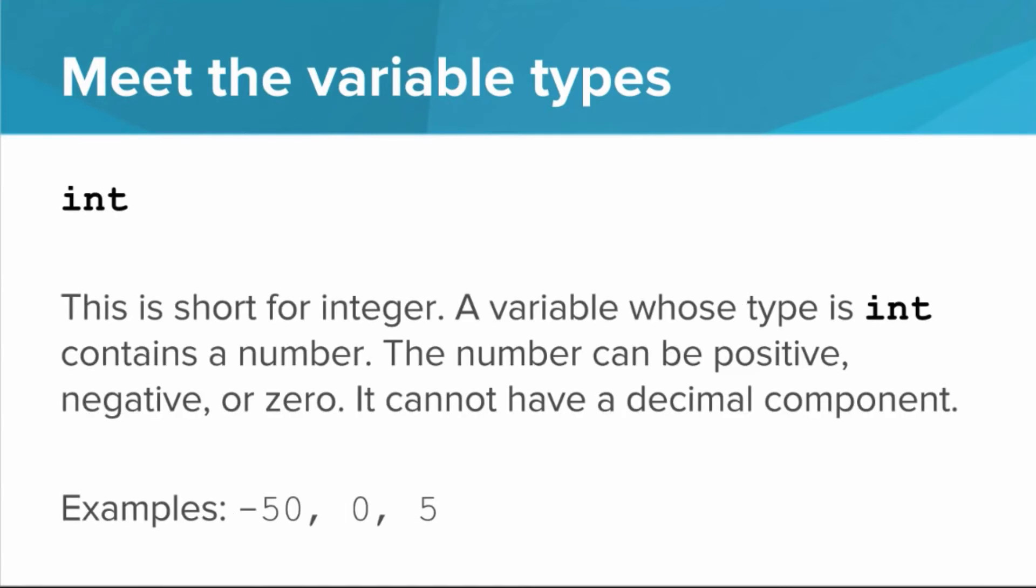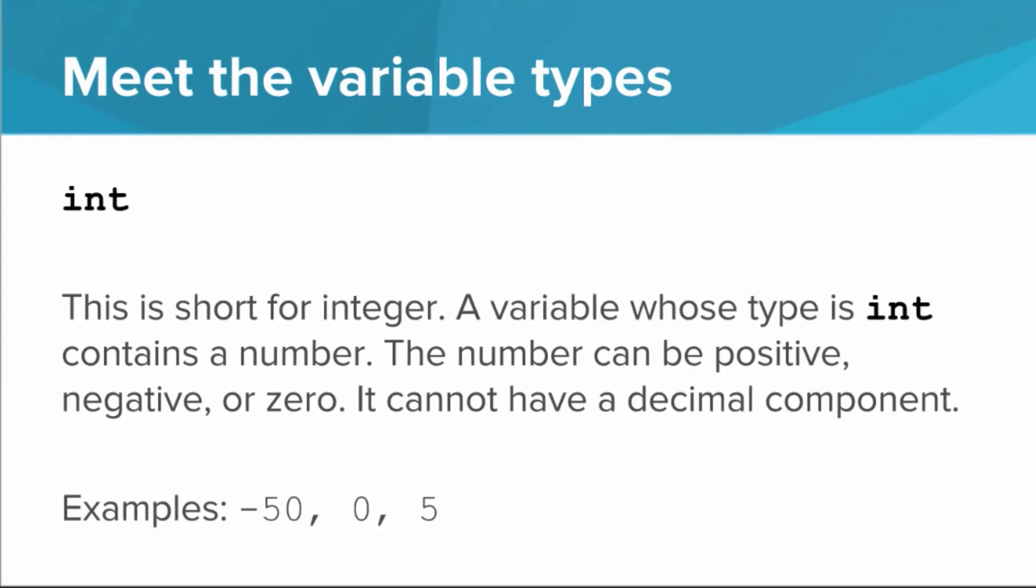Now let's look at the type int. Int is short for integer, and a variable whose type is int contains a number. And that number can be positive, negative, or zero. However, it cannot have a decimal component. So negative 50, 0, and 5 are all examples of integers.